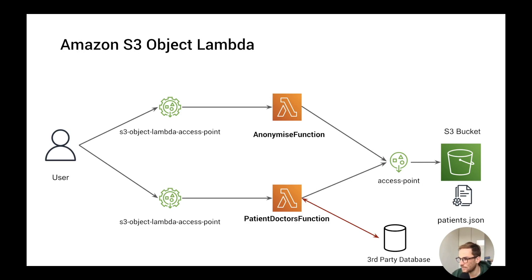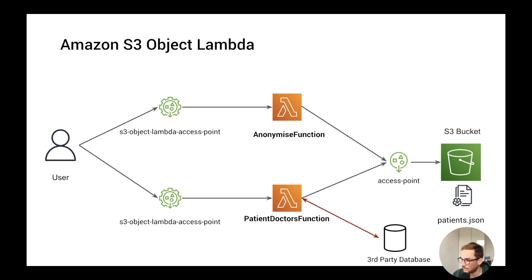Starting from the right side, we have the patient.json file saved on an S3 bucket. The first thing we need to do to use Object Lambda is to add an access point. An access point on S3 is basically an ACL group introduced by the S3 team to solve the problem when you have different applications and users accessing the data. Instead of creating a different bucket policy or ACL for each user or endpoint, you configure an access point with the set of credentials needed for the use case — and this is our entry point to access the S3 bucket and the patient.json file.